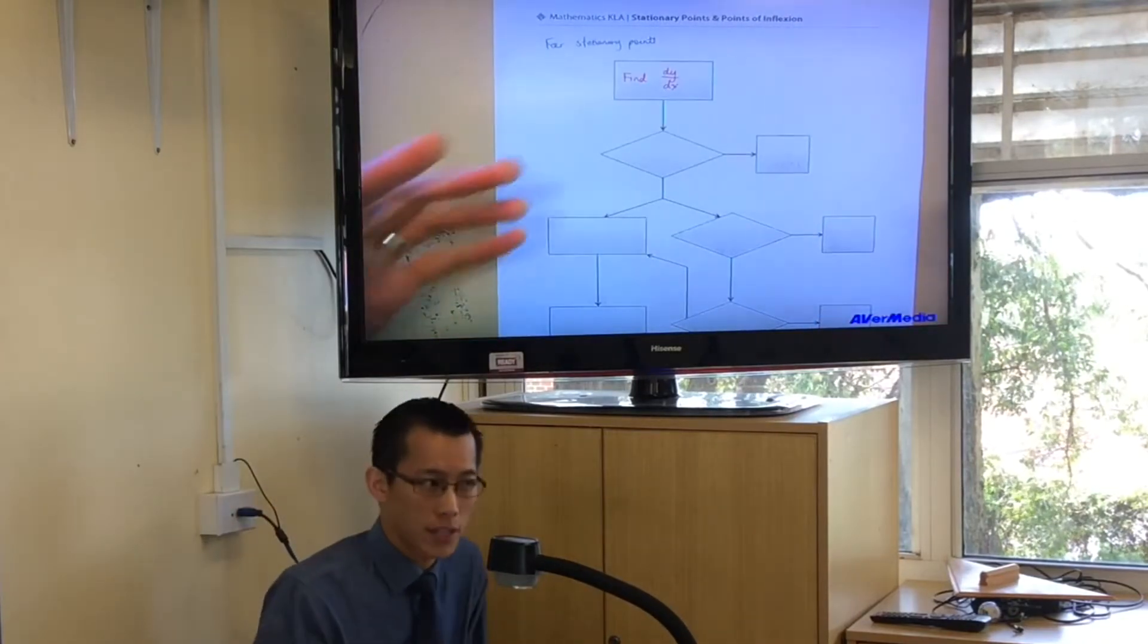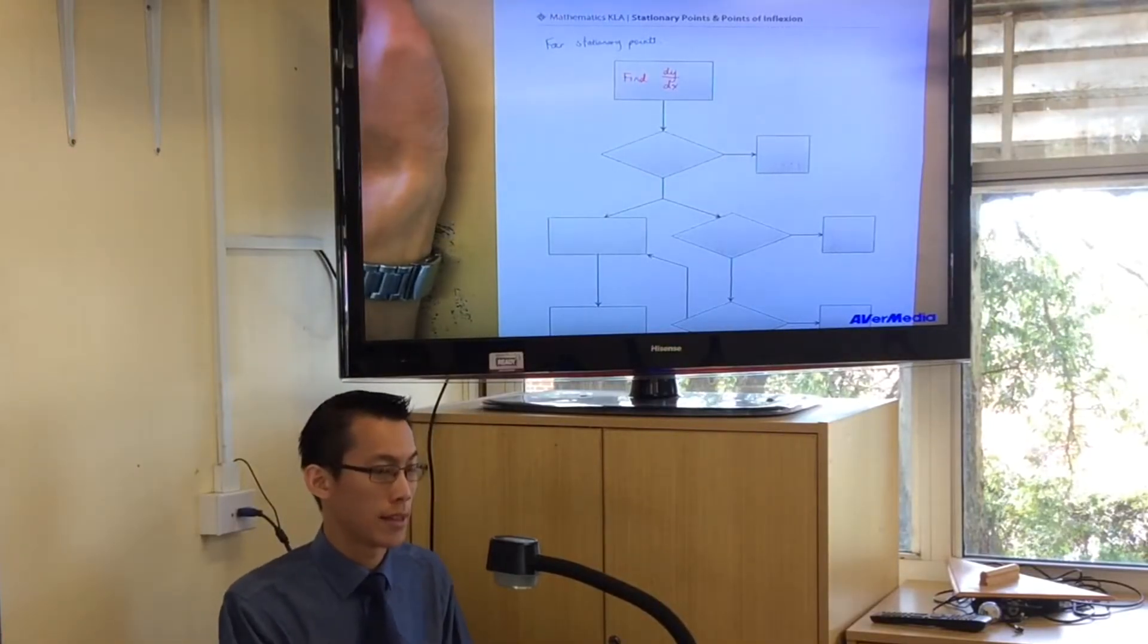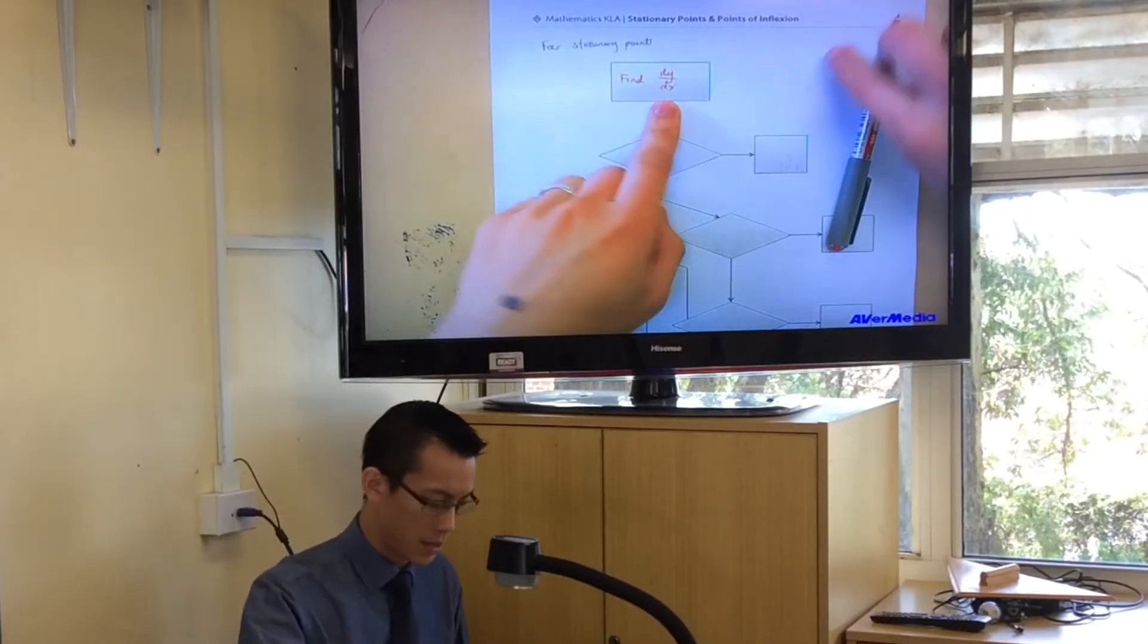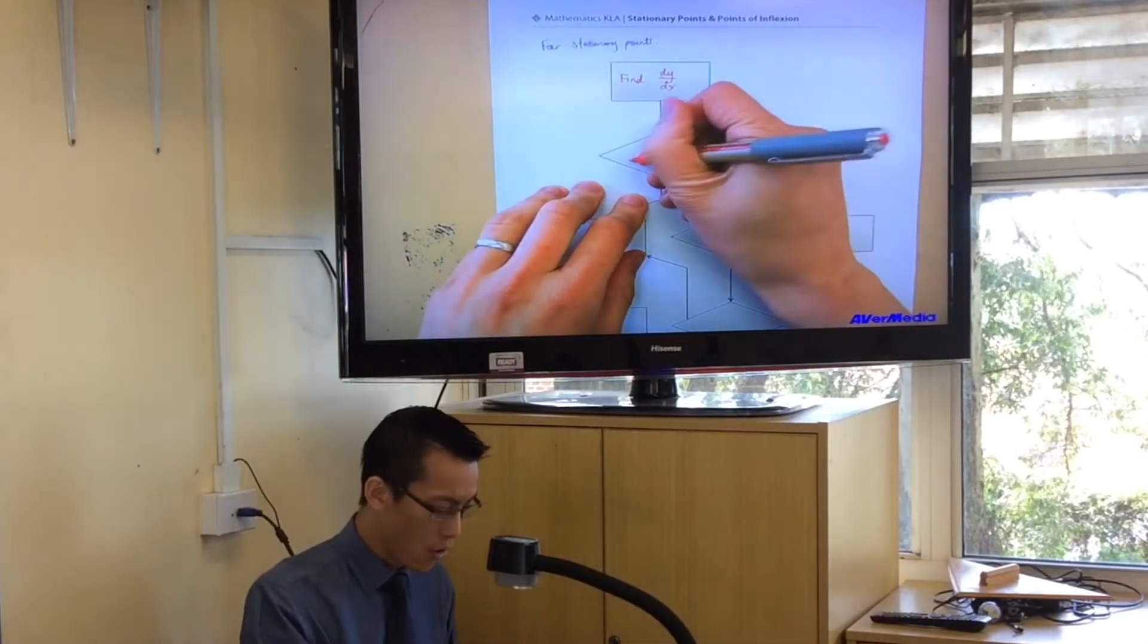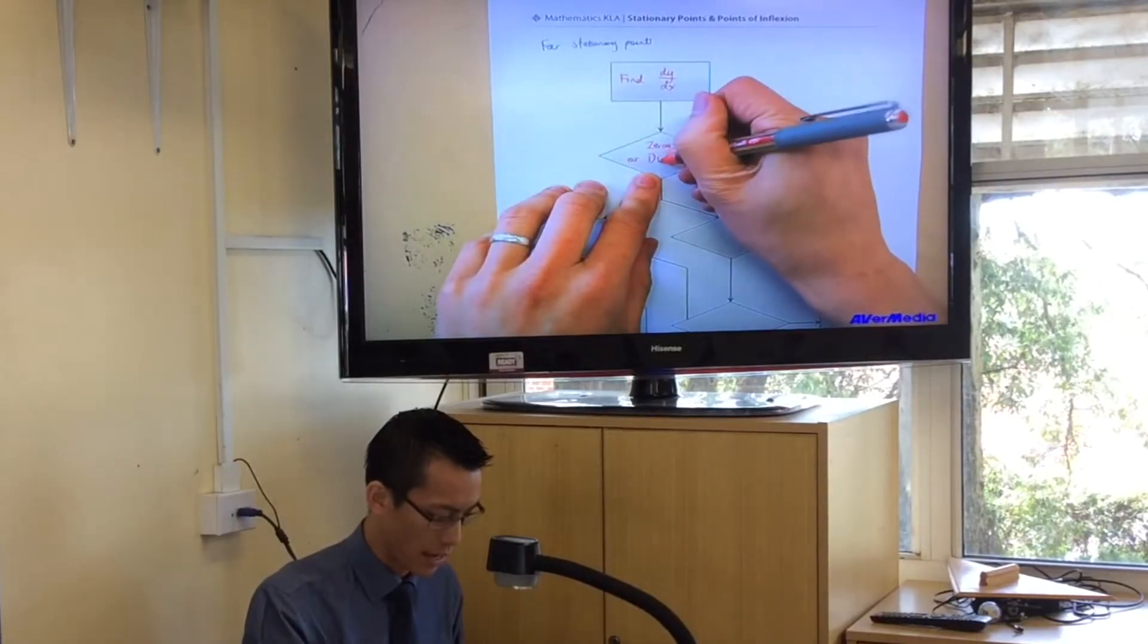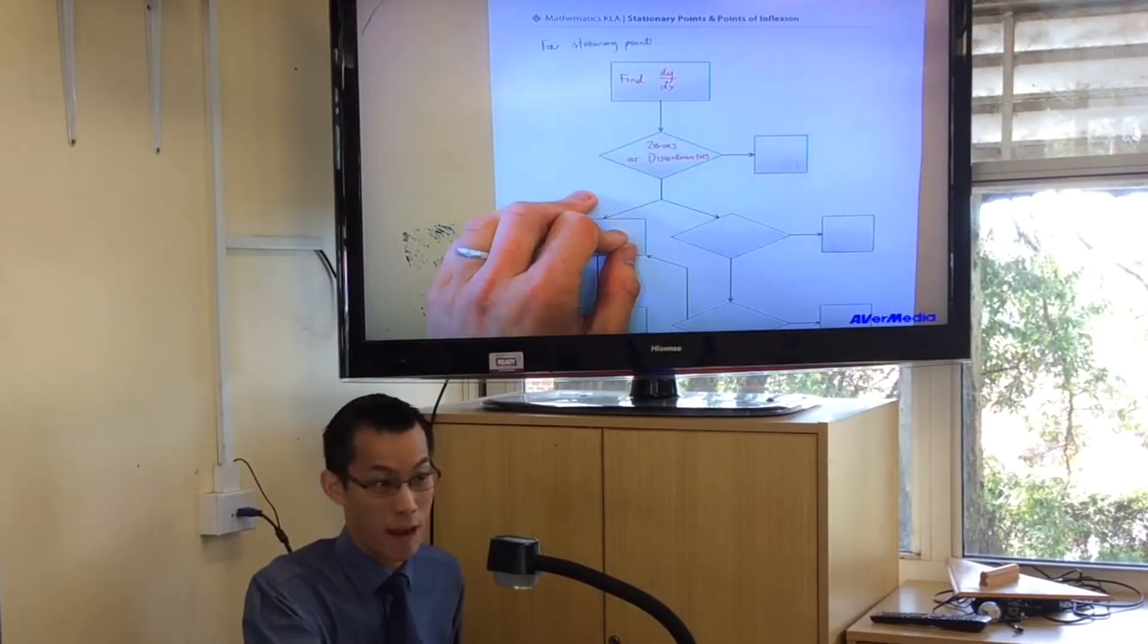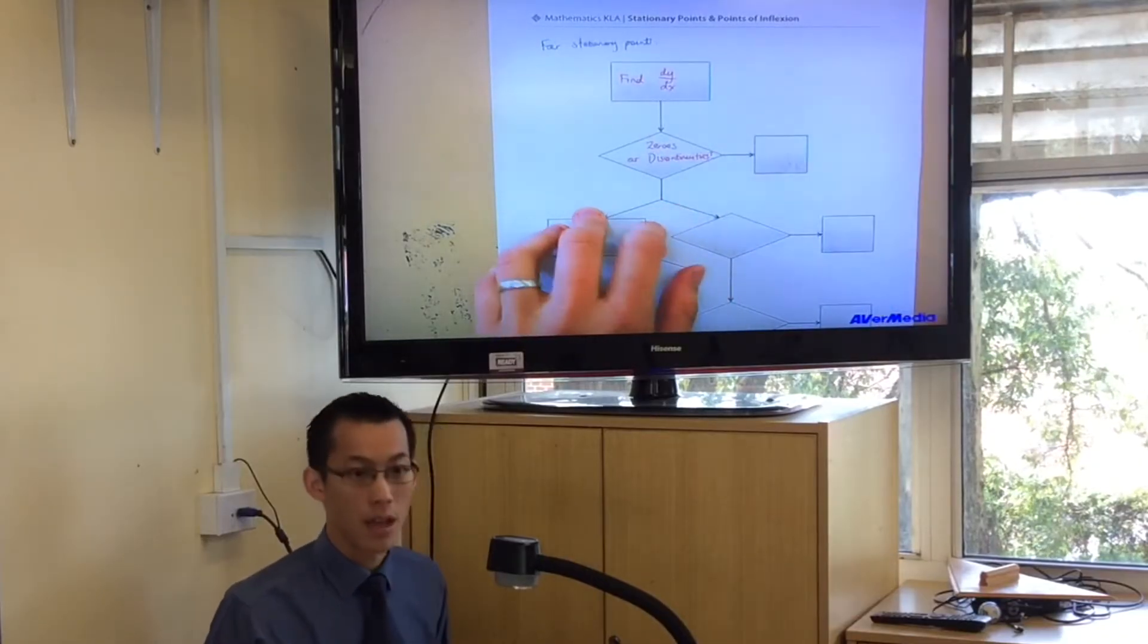Now from there, once you've got the first derivative, there's something that you're looking for. You're looking for two things. And again, this is what we were talking about last lesson. You're looking for places where that first derivative either is zero or whether it doesn't exist. Those are both important to us. So we would call those the places where the first derivative is zero, we call them zeros. Or places where the first derivative doesn't exist, we would call them discontinuities in the derivative.